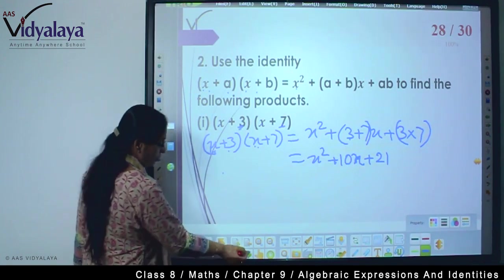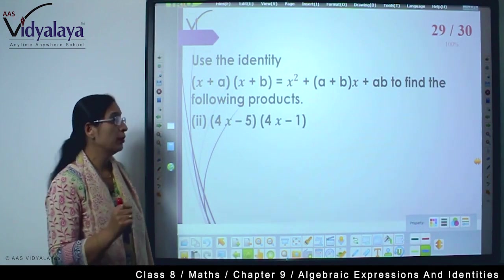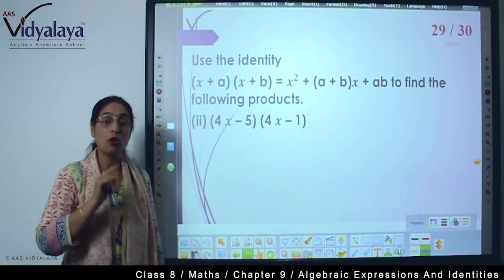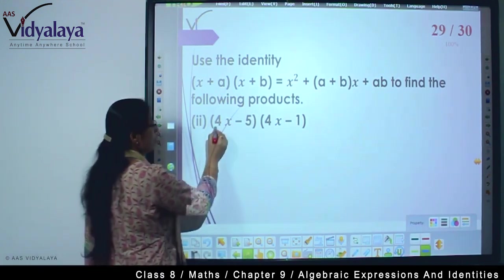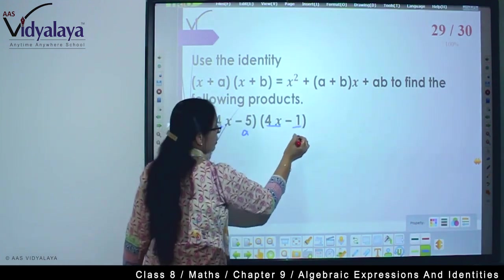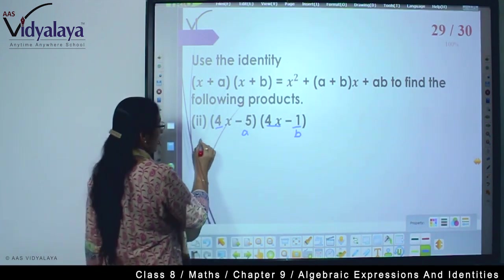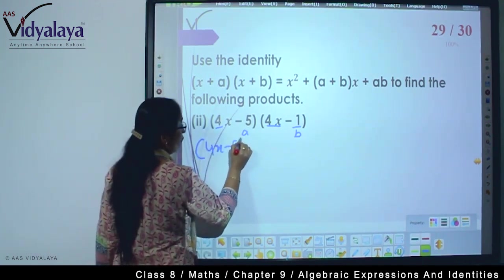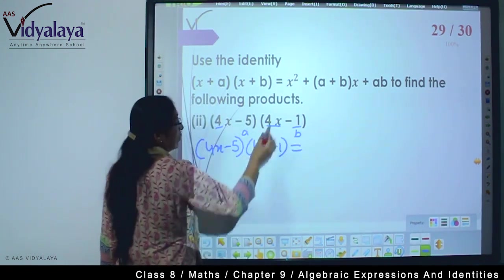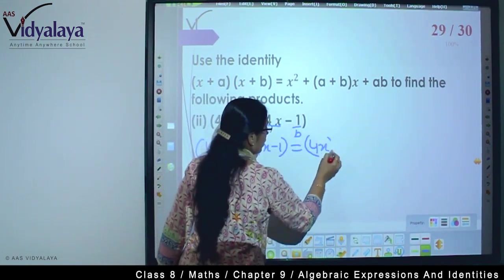There is one more question based on this concept, but we're doing this so that you also get practice. Now look at this - like we got x common there, here 4x is common, and then -5 will be considered a and -1 will be considered b. Clear? So now putting out this value: (4x-5)(4x-1).